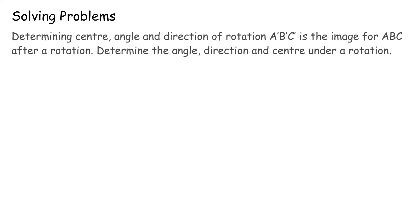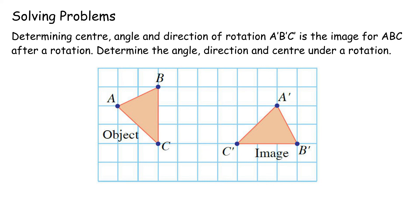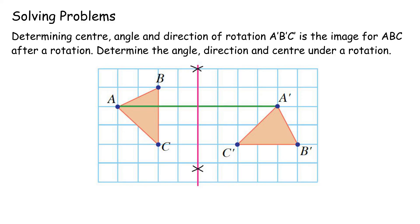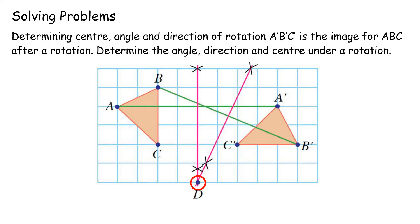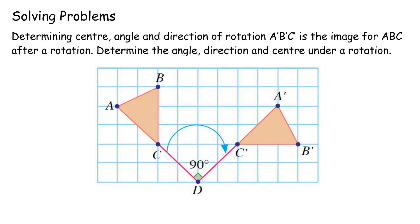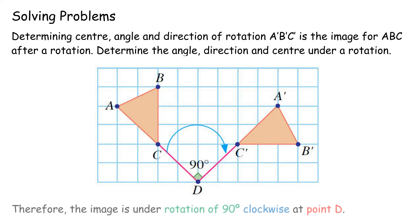Solving problems: determining center, angle, and direction of rotation. A'B'C' is the image for ABC after a rotation. Determine the angle, direction, and center. Step 1: Join point A to A' and construct a perpendicular bisector for line segment AA'. Step 2: Repeat for line BB' or CC'. Step 3: The intersection point of the two perpendicular bisectors is the center of rotation. Mark it as D. Step 4: Measure angle CDC' using a protractor. Therefore, the image is under a rotation of 90 degrees clockwise at point D.